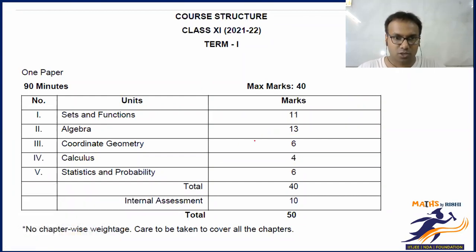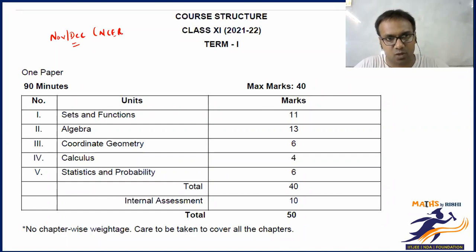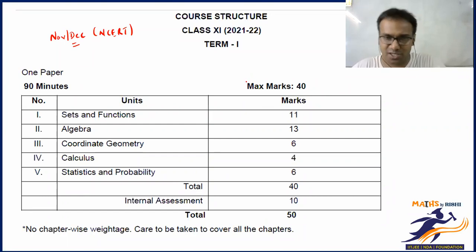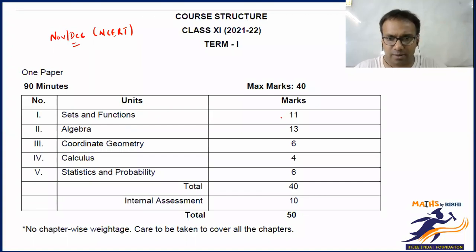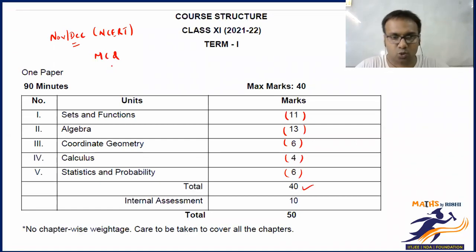In Term 1, you will have a 40-mark paper. This is proposed somewhere in November or December. The reference I'll be using is NCERT, although in regular classes we use R.D. Sharma. Since we are talking about syllabus deletion and CBSE's instructions, we'll refer to NCERT as our bible. Sets and Functions: 11 marks; Algebra: 13 marks; Coordinate Geometry: 6 marks; Calculus: 4 marks; Statistics and Probability: 6 marks - overall 40 marks.